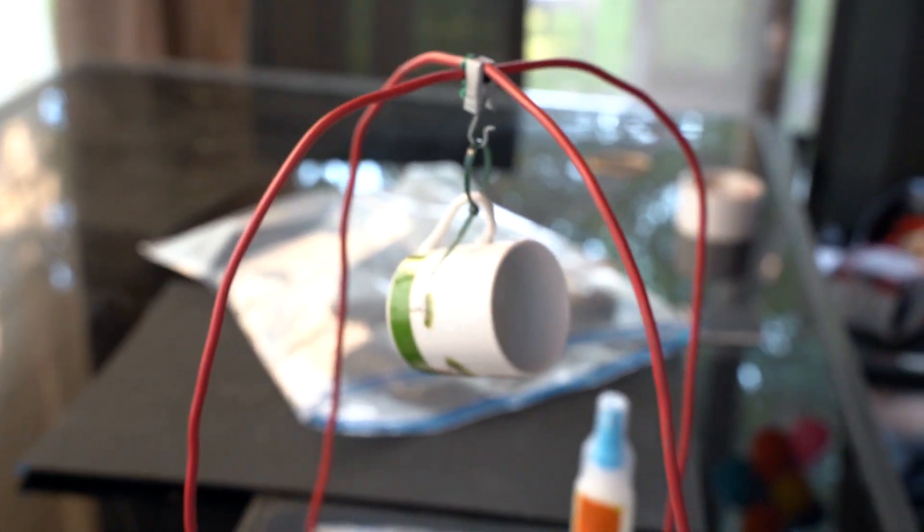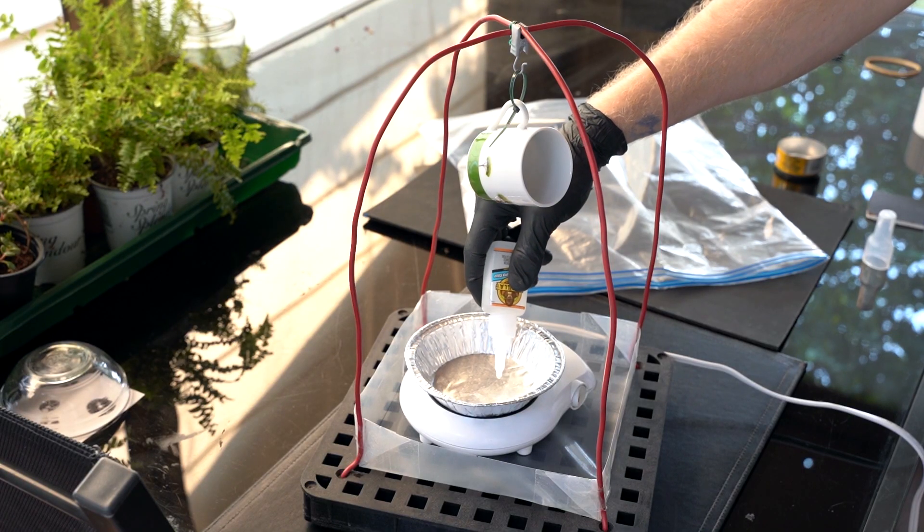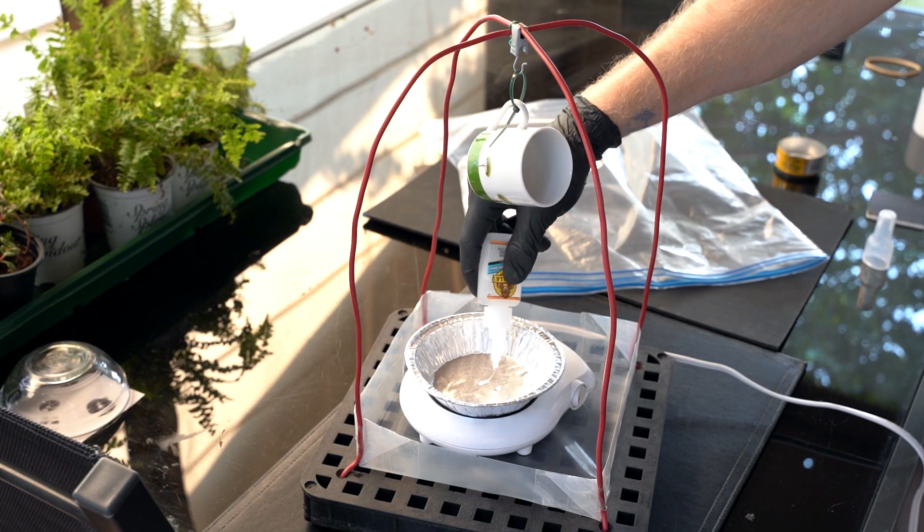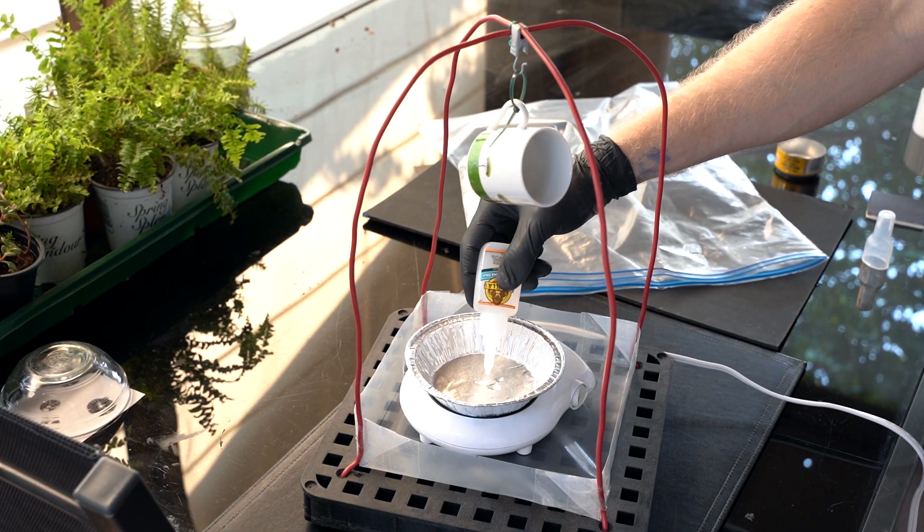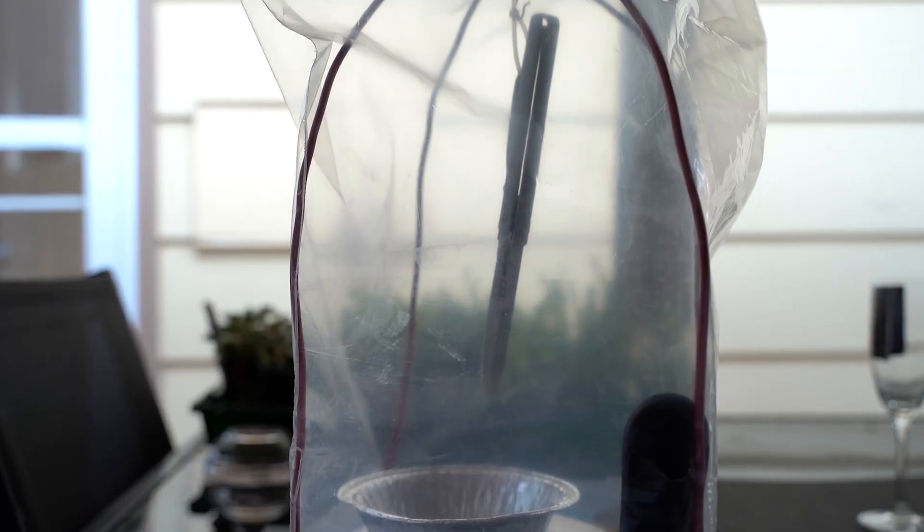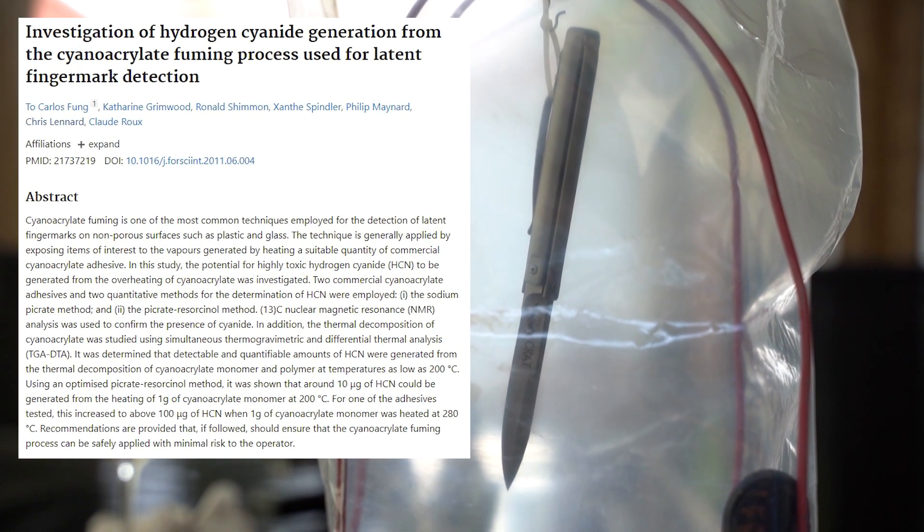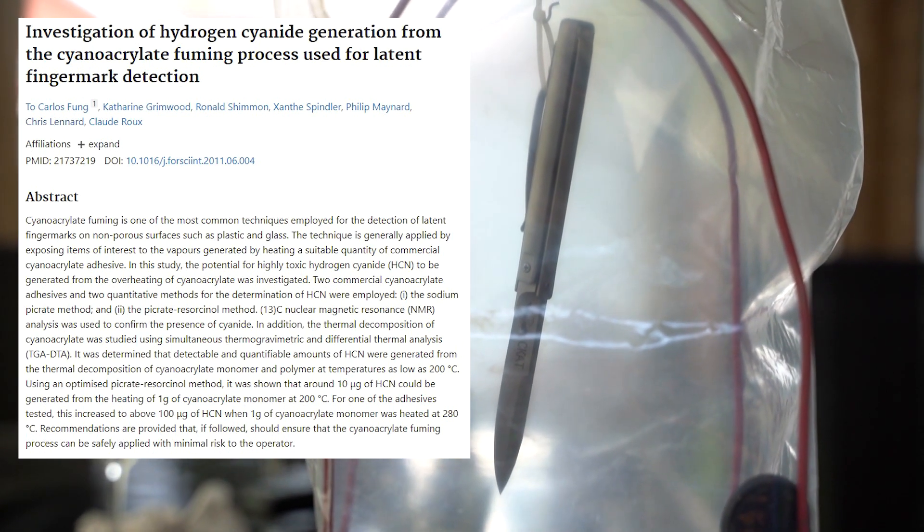Objects to be processed are suspended in the chamber and a small amount of liquid cyanoacrylate is heated to around 80 to 100 degrees Celsius to produce efficient vapor. The heating of cyanoacrylate reduces the time required to develop latent fingerprints. Overheating of cyanoacrylate ester should be avoided as it produces toxic hydrogen cyanide if heated above approximately 220 degrees Celsius.